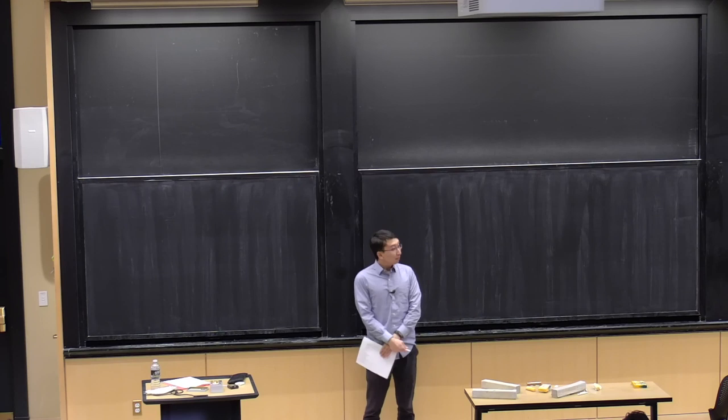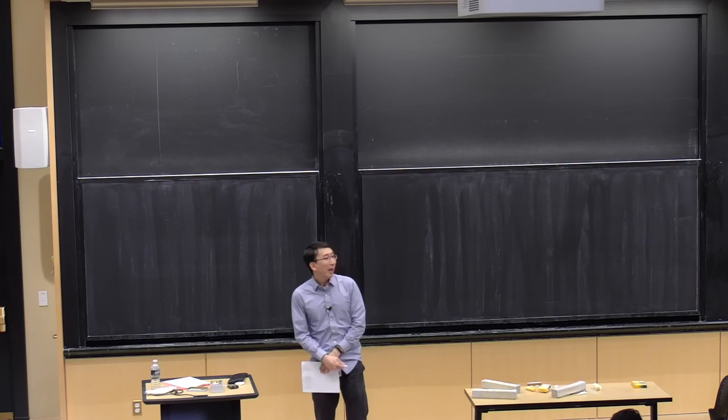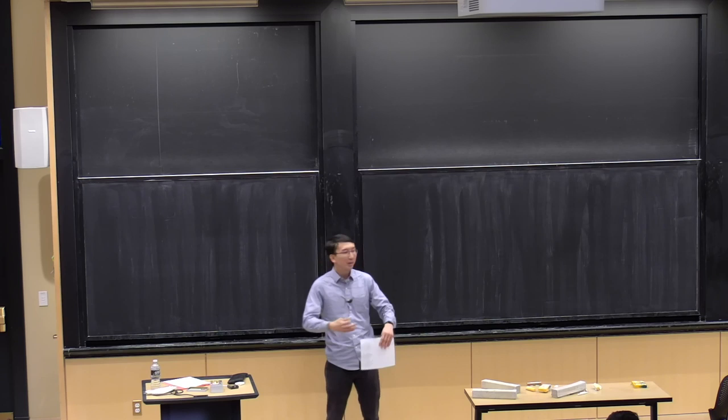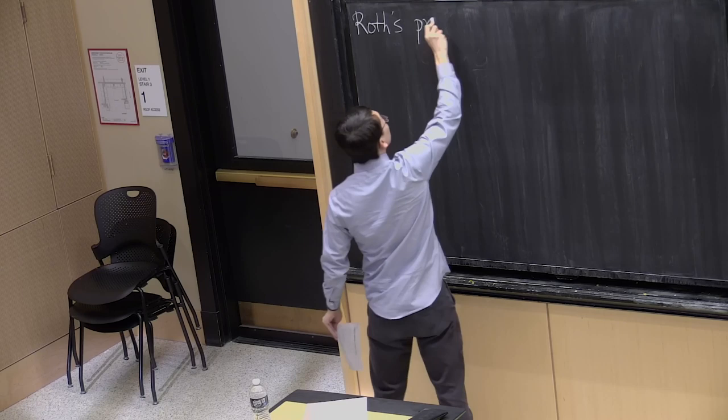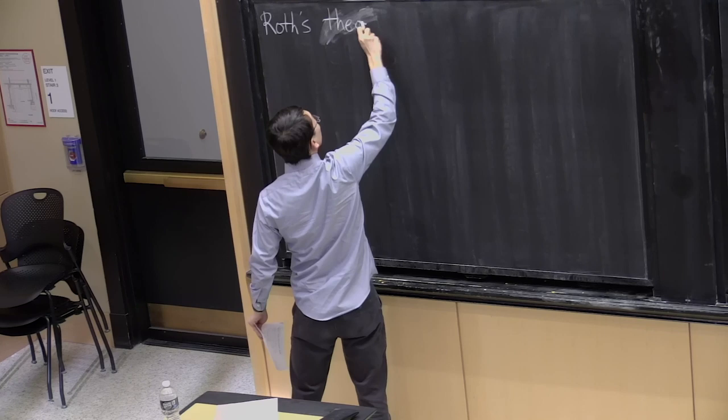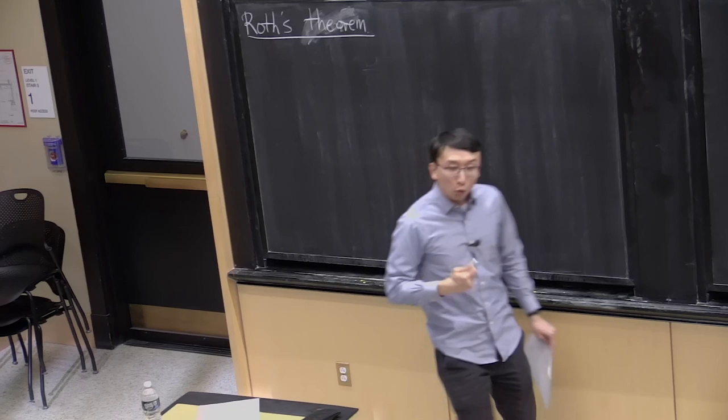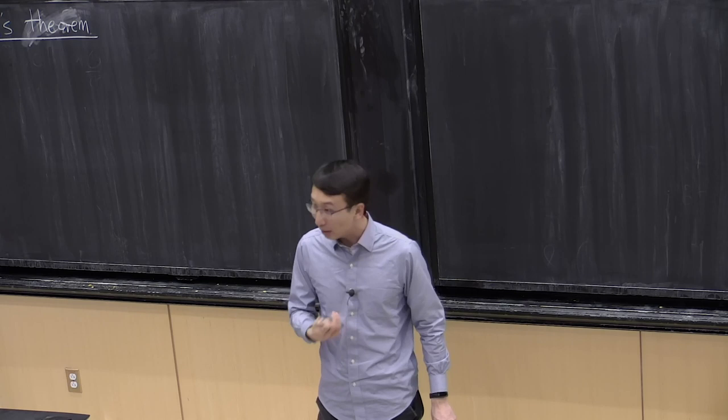Let's get started. We spent quite a bit of time with graph theory in the first part of this course, and today I want to move beyond that. We're going to talk about more central topics in additive combinatorics, starting with the Fourier analytic proof of Roth's theorem. We discussed Roth's theorem earlier in the course, and gave a proof using Szemerédi's graph regularity lemma as well as the triangle removal lemma.